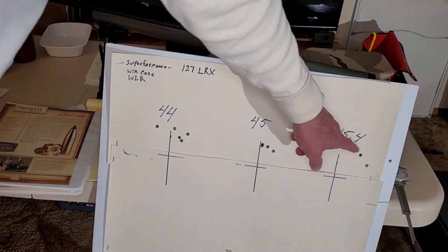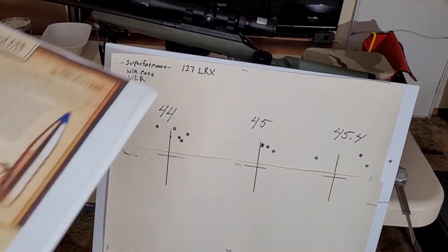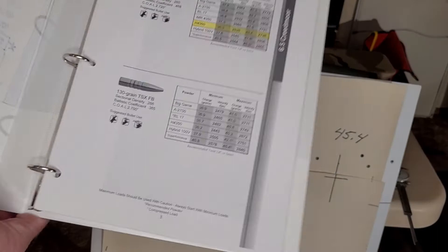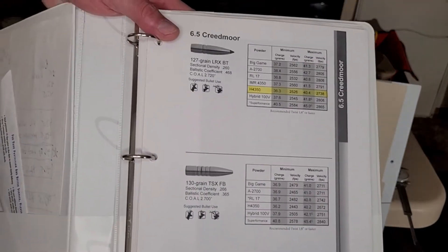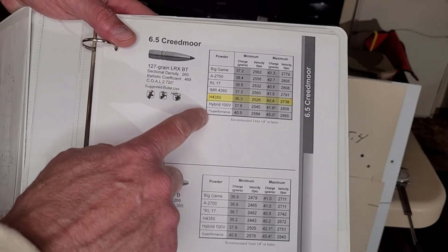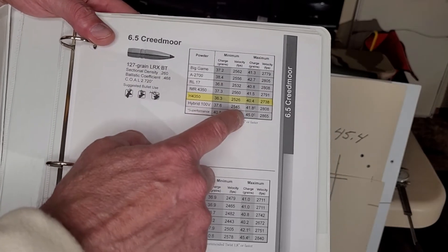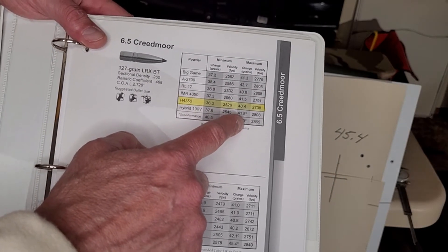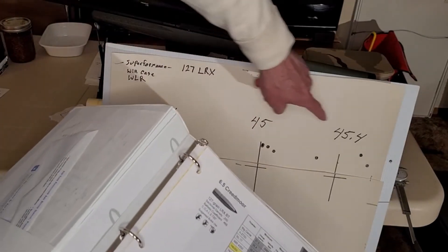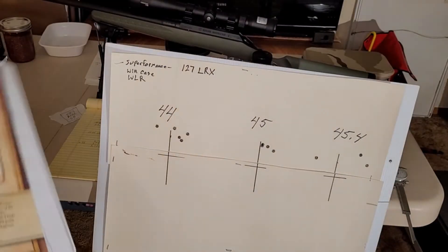That is just 0.4 grains over there. Here is your load for your Creedmoor. 43.50, and look down here at the bottom. Super Performance, 45 grains, it's a compressed load and that is max. So from here, 0.4 grains feels like a shotgun. That's what we're going to revisit today.